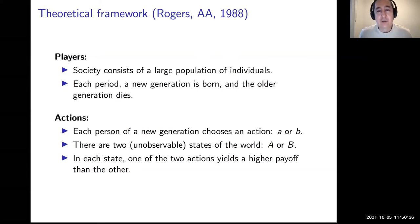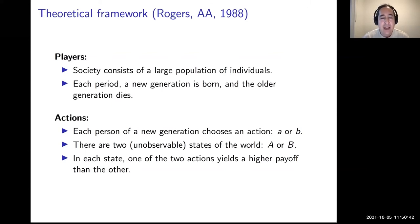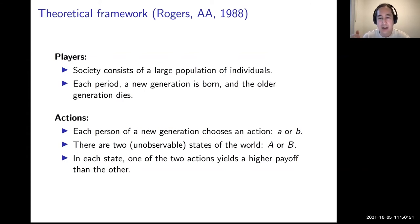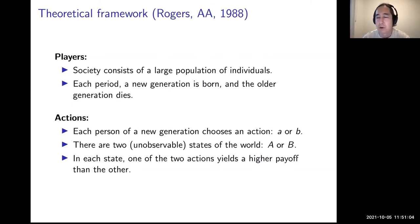I thought it would be helpful to have a theoretical framework to think about this carefully. There are many models one could use — a ton by Boyd and Richerson — but I'm going to use Alan Rogers's classic model from 1988, just because it's the simplest model. I love presenting this to economists because it illustrates two or three super important points.